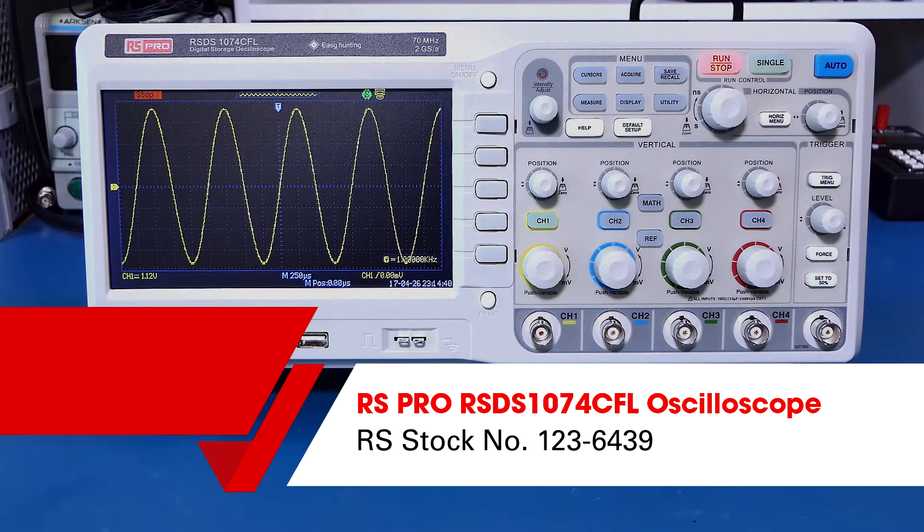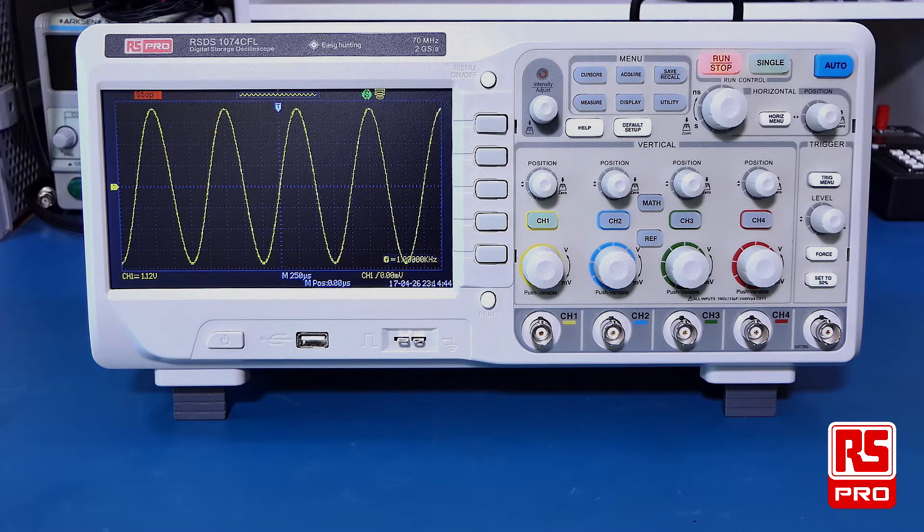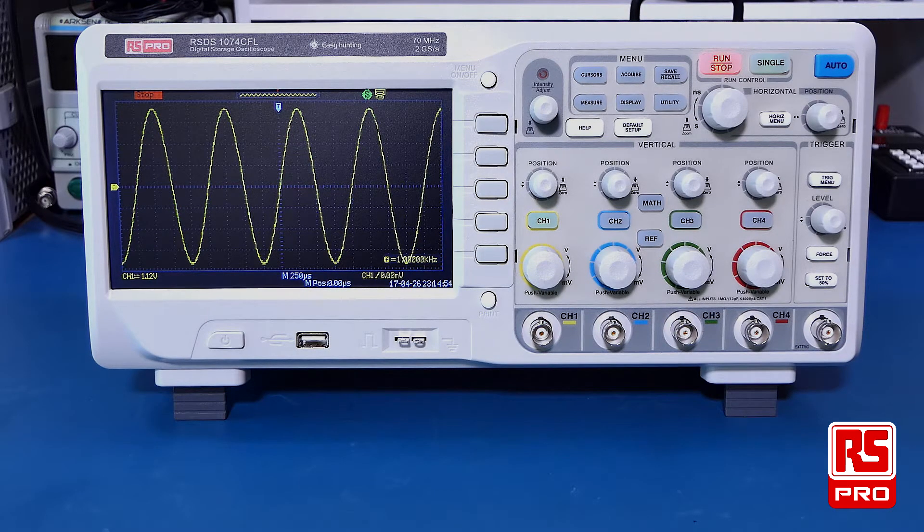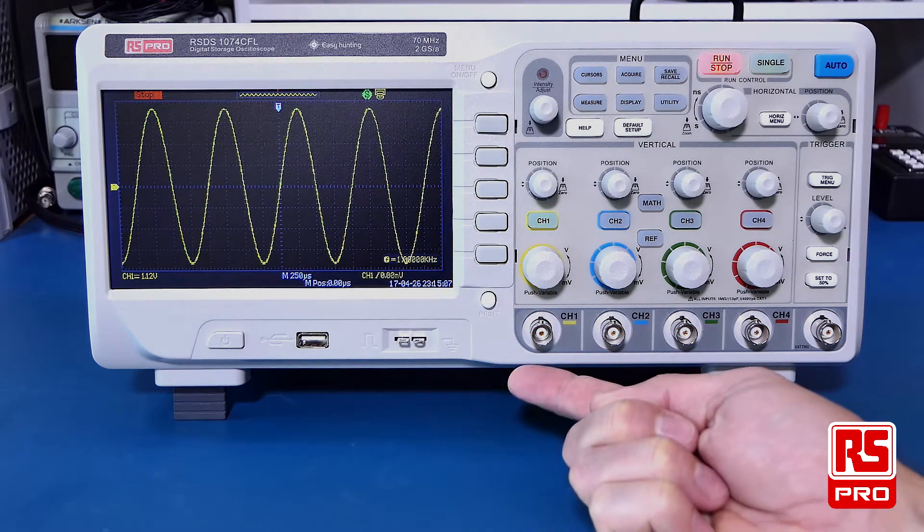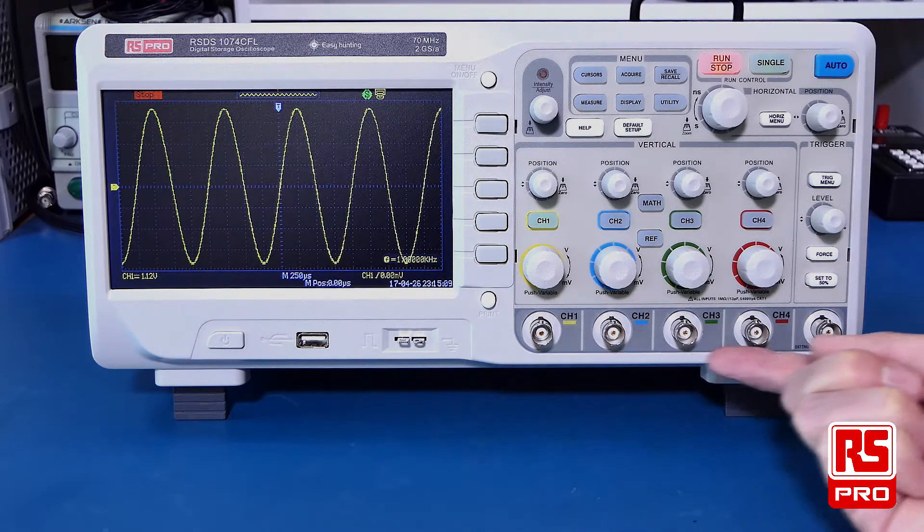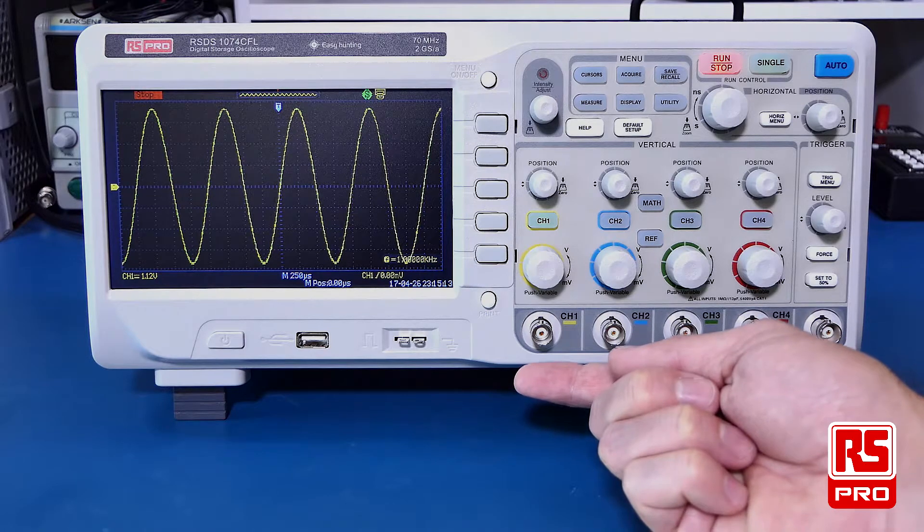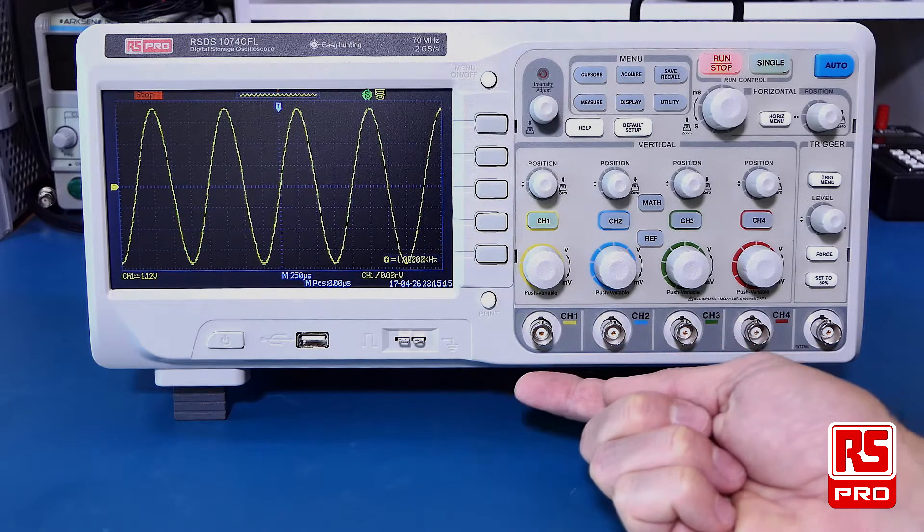Hello and welcome to this overview of the RS-PRO RSDS-1000 CFL series of digital storage oscilloscopes. The RSDS-1000 CFL series of oscilloscopes have a range of scopes that comprise of four channels with bandwidths from 70 MHz all the way up to 300 MHz.